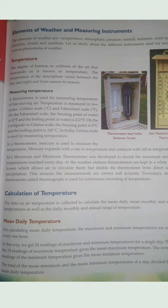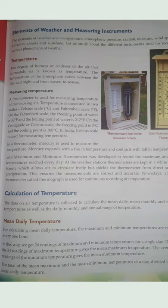Six's maximum and minimum thermometer was developed to record the maximum and minimum temperatures reached every year. At weather stations, thermometers are kept in a white Stevenson screen which allows air to circulate freely but shields the thermometer from direct sunlight and precipitation, ensuring accurate measurements. Nowadays, an automatic thermometer called a thermograph is used for continuous recording of temperature.